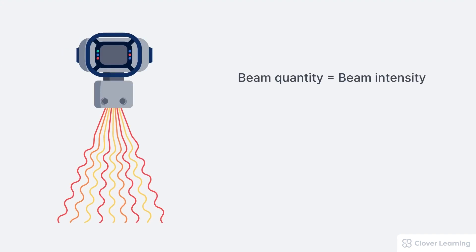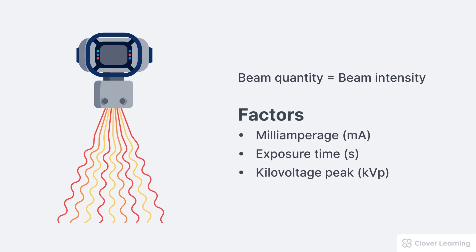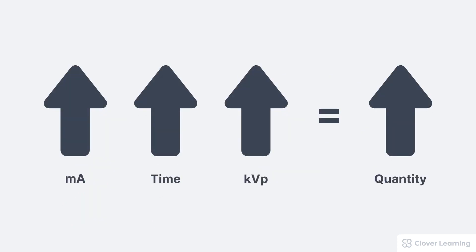In summary, beam quantity refers to the total number of photons in an x-ray beam. Beam quantity is also known as beam intensity, and it is determined by several factors, including the three discussed in this lesson: MA, exposure time, and KVP. We'll discuss the other factors in another lesson. As we increase any of these factors — MA, exposure time, or KVP — we increase the beam quantity or intensity. Increased MA, longer exposure times, and higher KVP all add to the quantity of photons in the x-ray beam and therefore increase the beam intensity.